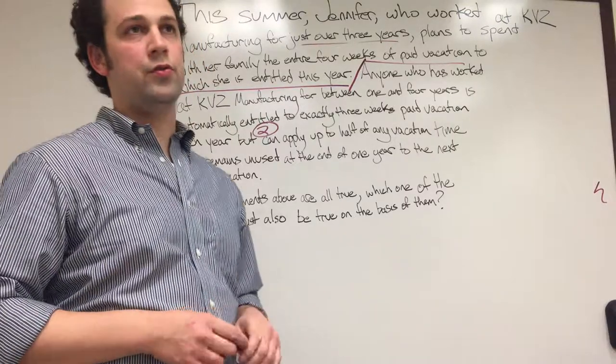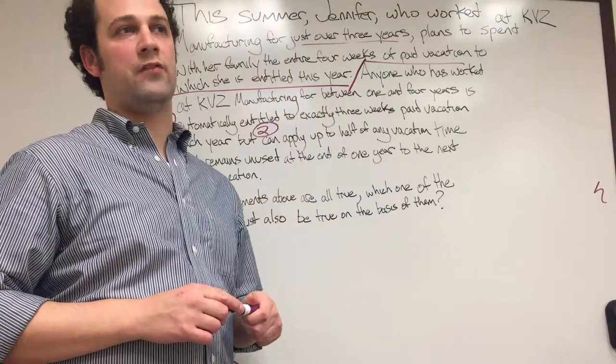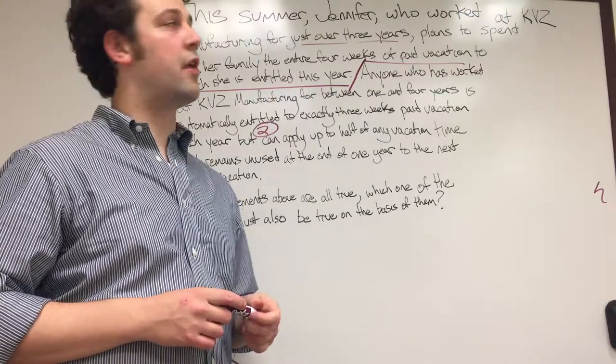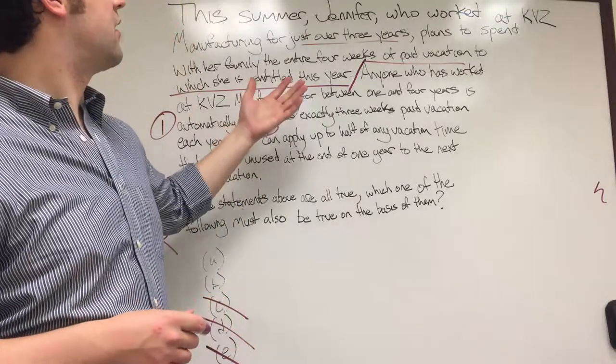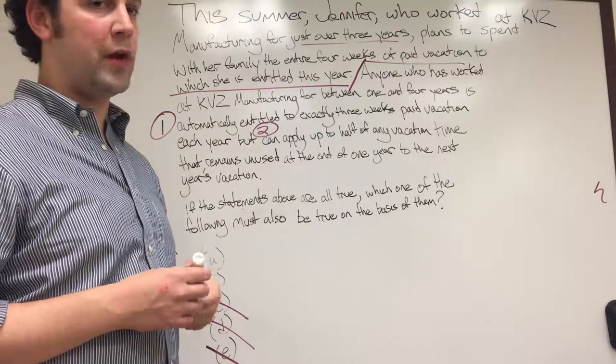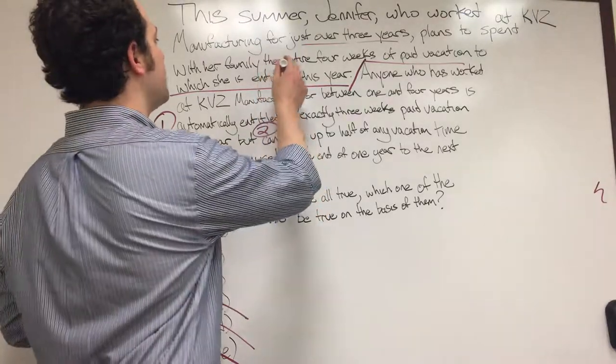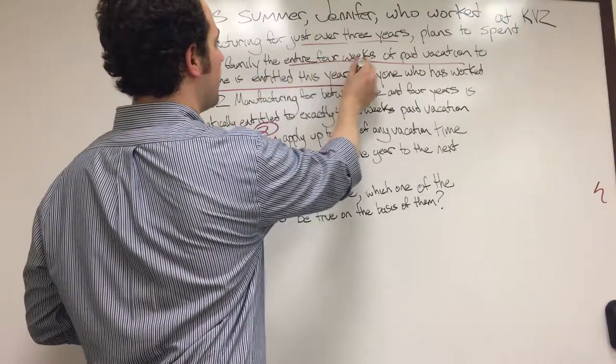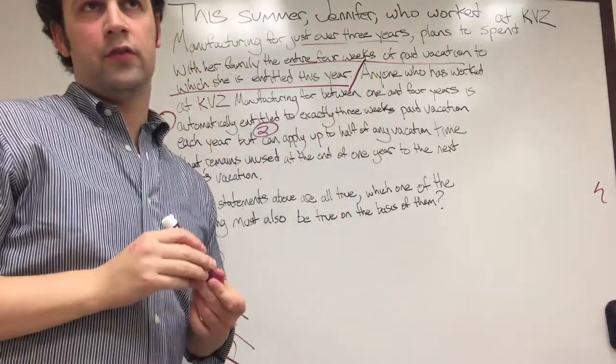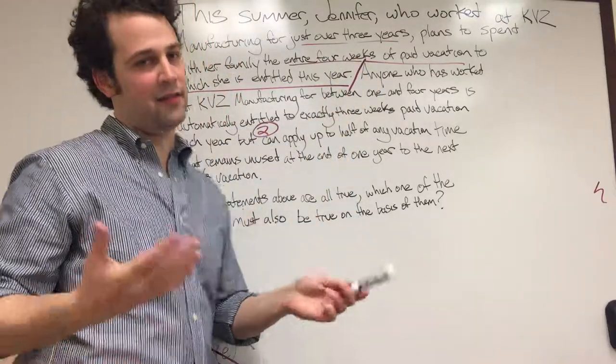So again, so Jennifer did not use two weeks of paid vacation time to which she was entitled last year. If that was true, theoretically she could be rolling forward more than the one week based on our factual scenarios. We know she only has one week rolled forward from last year because she was entitled to the entire four weeks. So A again, can't be true.